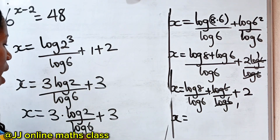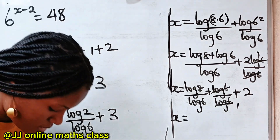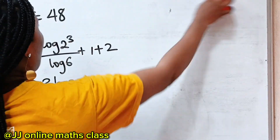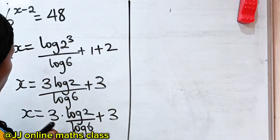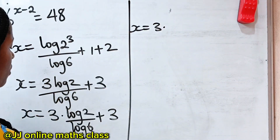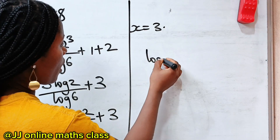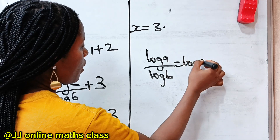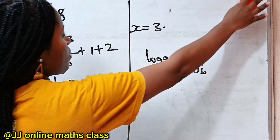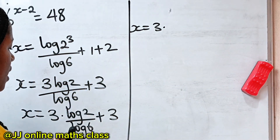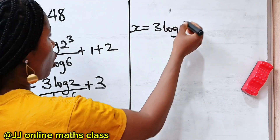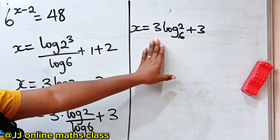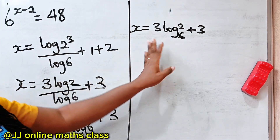Now I'd like you to watch to the end and see how I prove that the answer we got is correct. Recall that when you have log A over log B, this is equal to log A base B. So that means we can write x as 3 multiplied by log 2 base 6, plus 3. This is the value of our x.